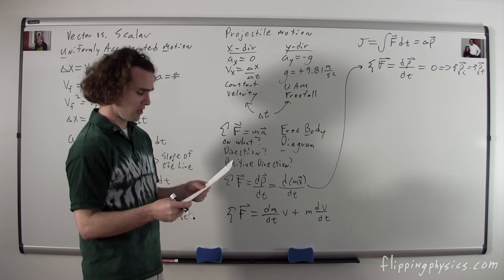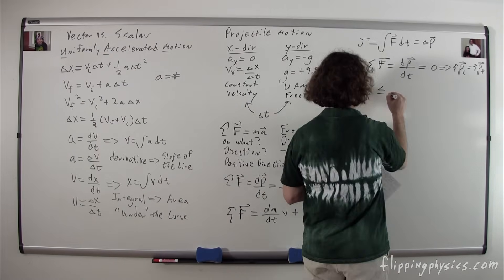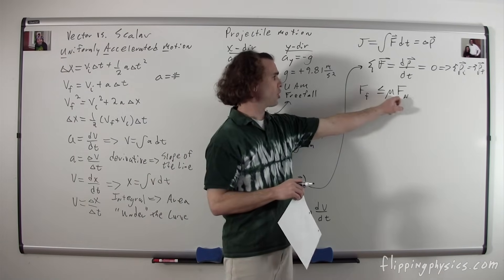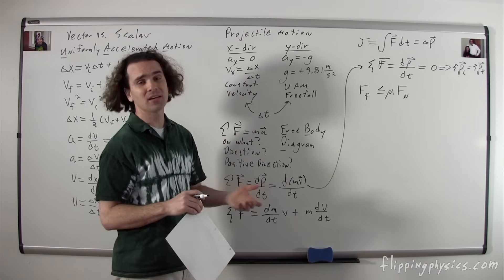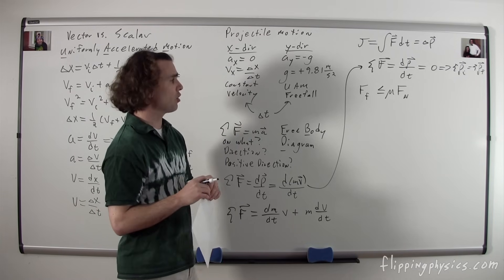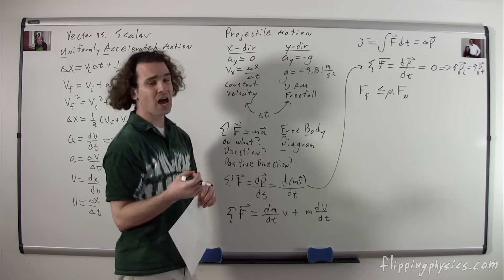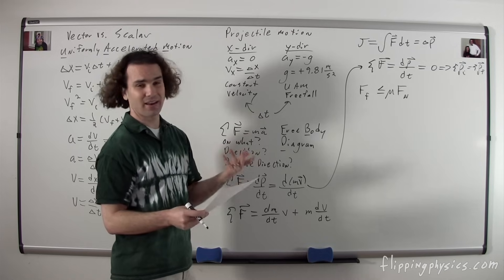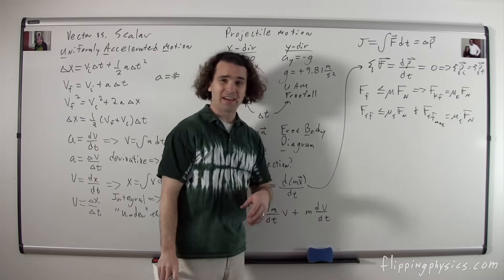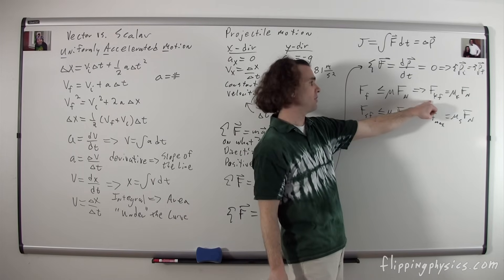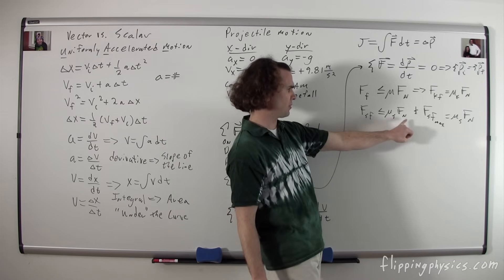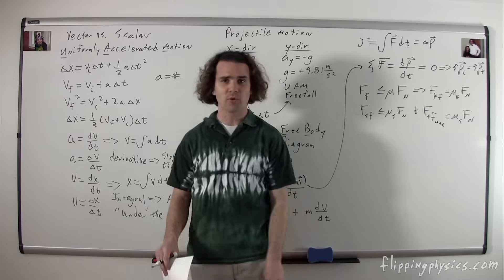Let's talk about specific forces — the force of friction, for example. The force of friction by definition is less than or equal to mu times the force normal, where mu is the coefficient of friction, which has no dimensions and depends on the two surfaces interacting. We have two types: static friction (non-moving) and kinetic friction (moving). The force of kinetic friction equals mu-k times the normal force. The force of static friction is less than or equal to mu-s times the normal force, though you usually use the maximum static friction equal to mu-s times the normal force. It is important to remember that static friction adjusts up and down to prevent the object from moving.